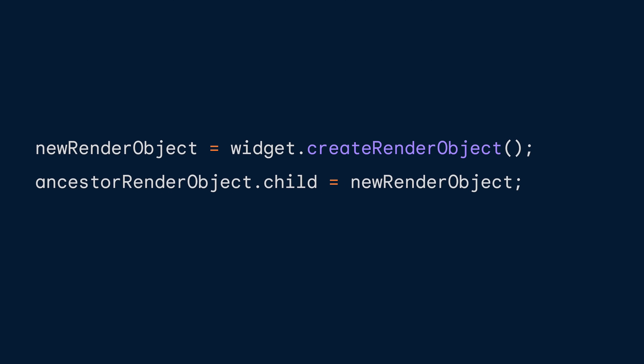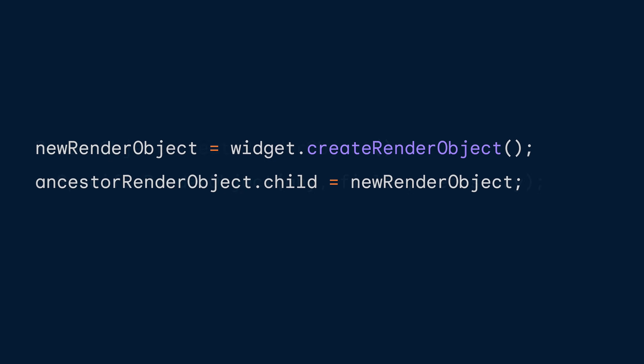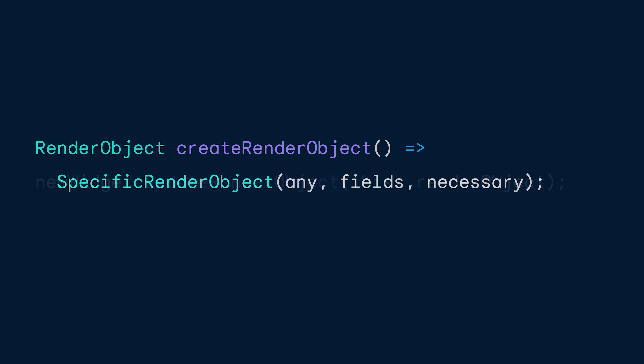So if stateless and stateful widgets build more widgets, and render object widgets produce render objects, what does that look like? The element behind a render object widget runs this pseudocode, creating a render object, and then inserting it into the render tree by saving that new object on the nearest ancestor render object's child property. And here's an example implementation of createRenderObject — and as you can see, it creates a render object.